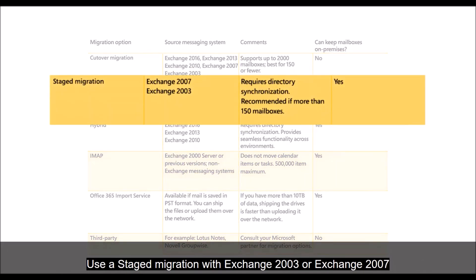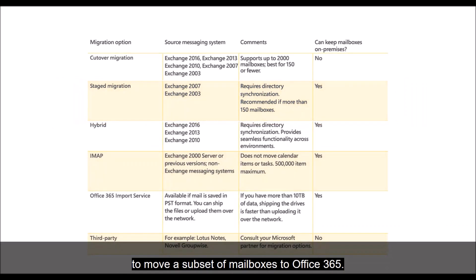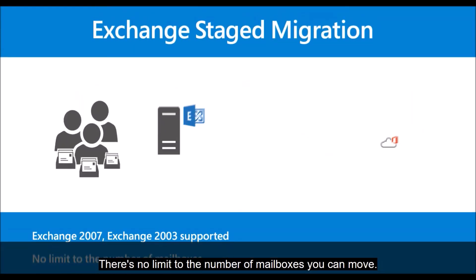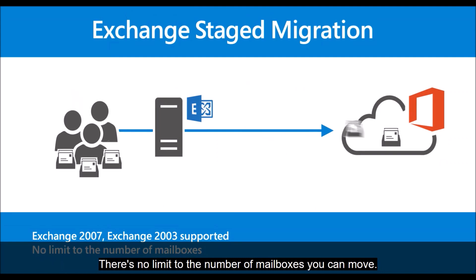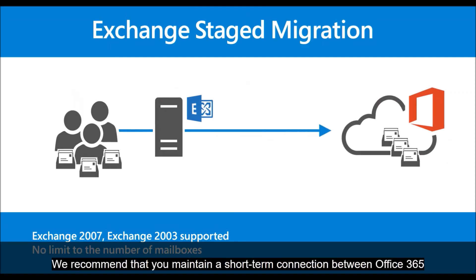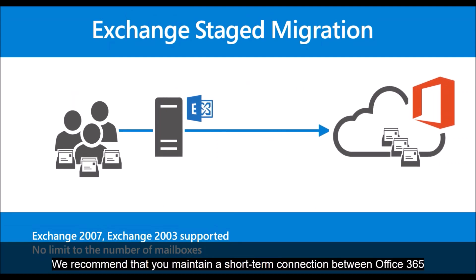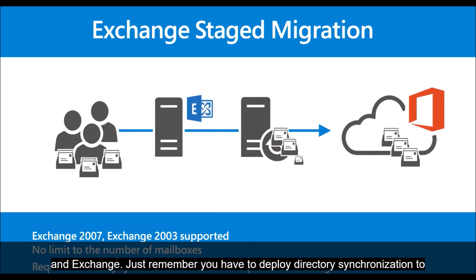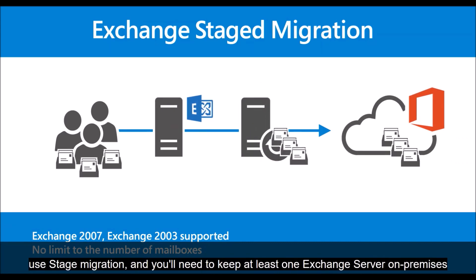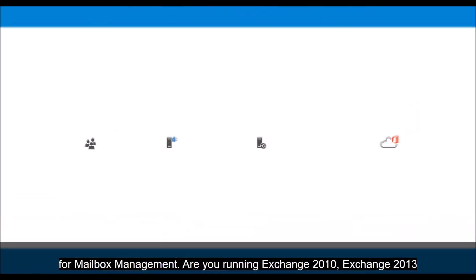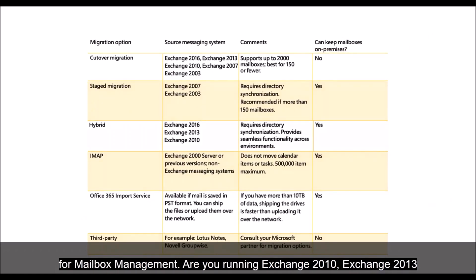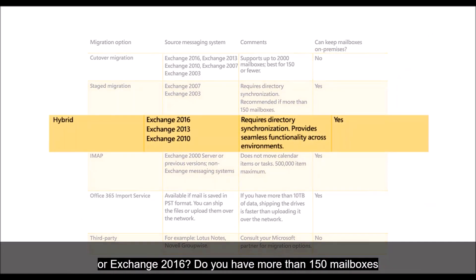Not in a hurry to move everyone to the cloud? Use a staged migration with Exchange 2003 or Exchange 2007 to move a subset of mailboxes to Office 365. There's no limit to the number of mailboxes you can move. We recommend that you maintain a short-term connection between Office 365 and Exchange. Just remember, you have to deploy directory synchronization to use staged migration, and you'll need to keep at least one Exchange Server on-premises for mailbox management.